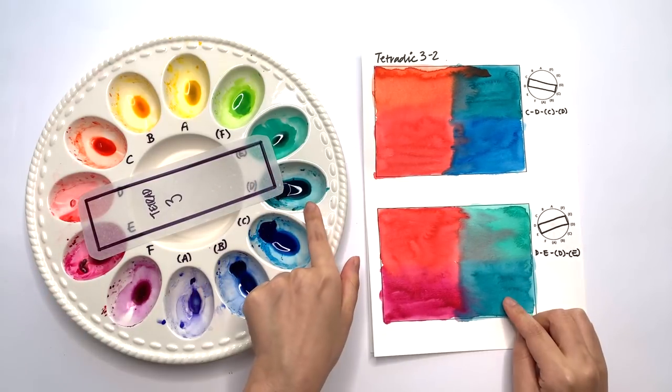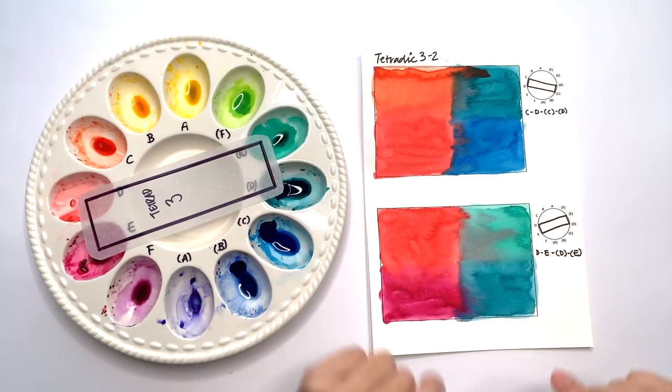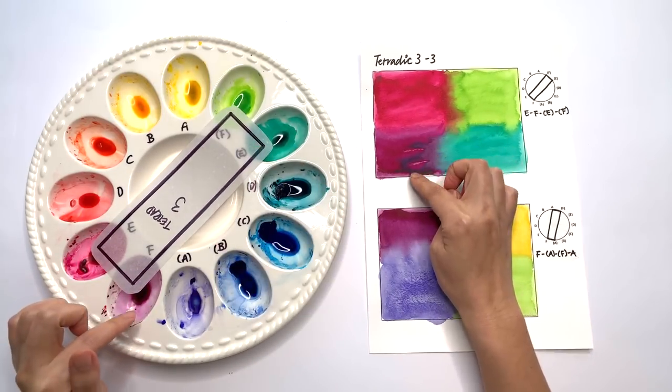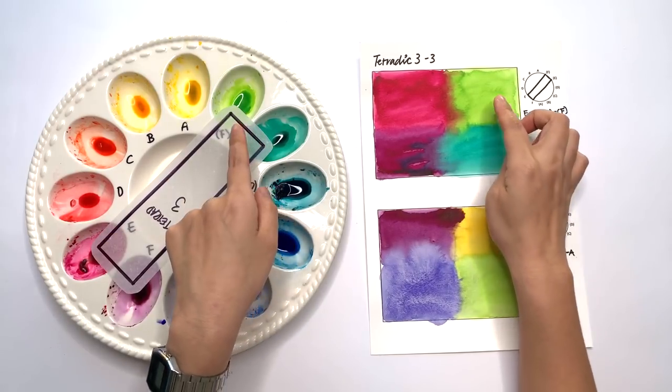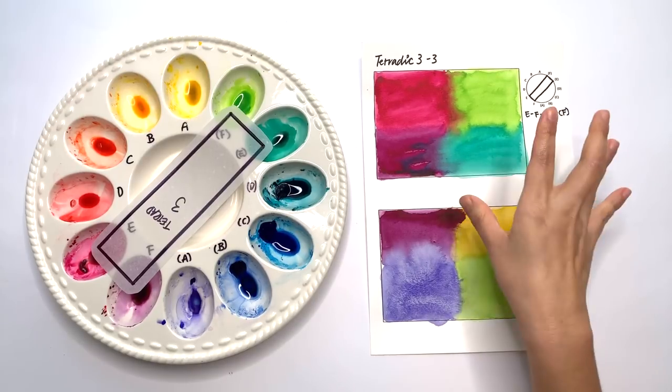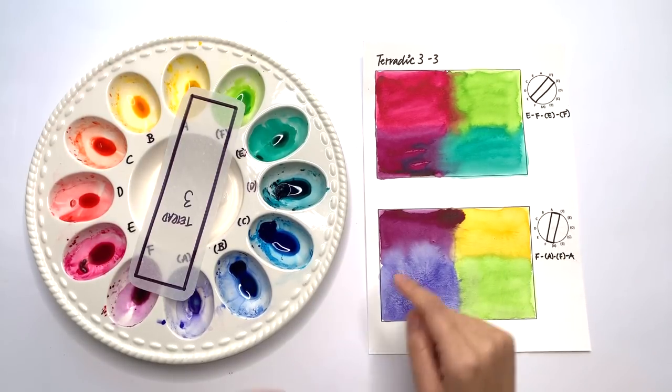And E bracket. And then we have E and F, E bracket and F bracket and I really like this color scheme out of all the tetrads.